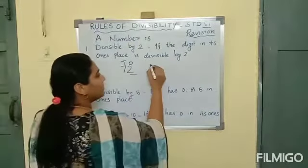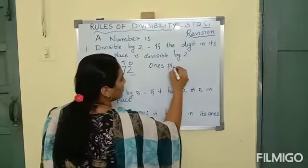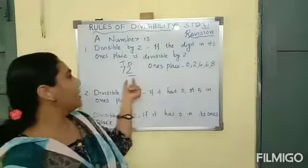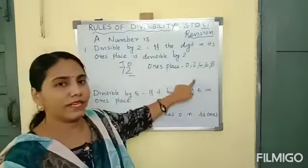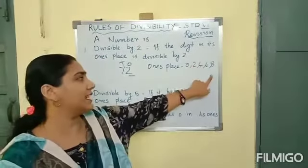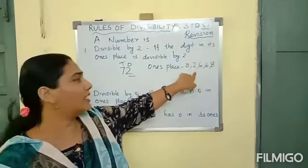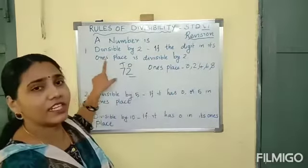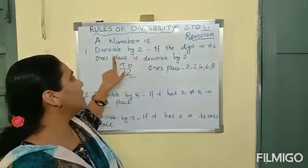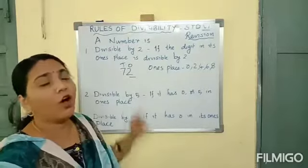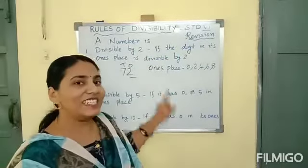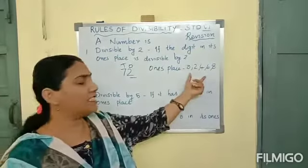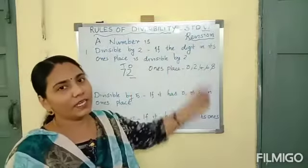In other words, you can check the ones place digit. If it is 0, 2, 4, 6, or 8, you can divide the whole number by 2. Any of these digits in the ones place means that number is divisible by 2.